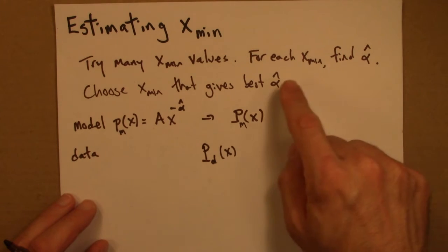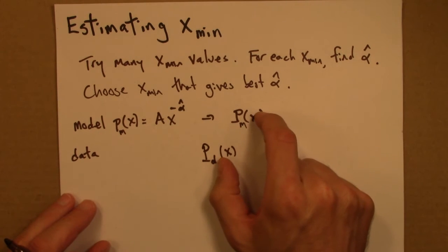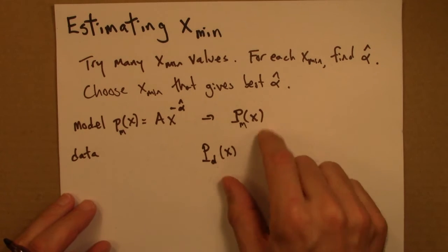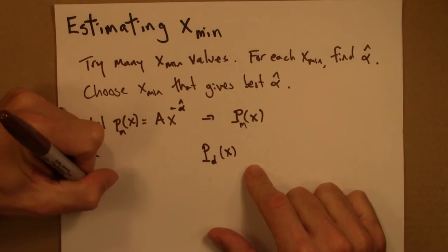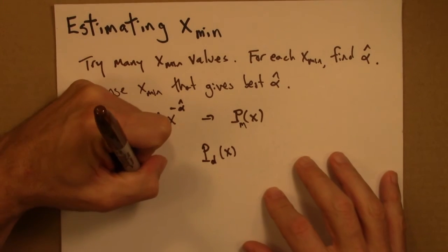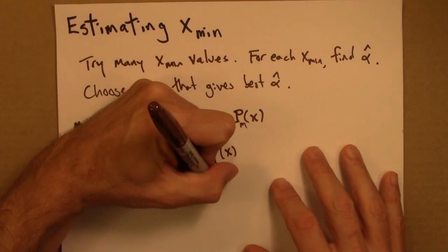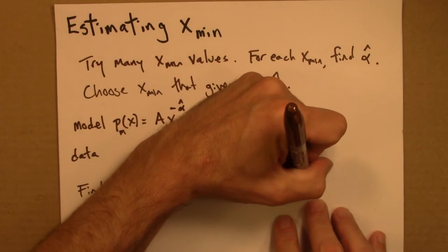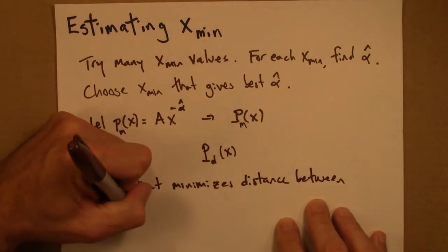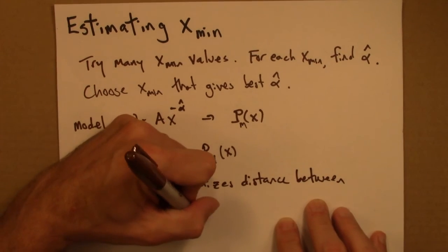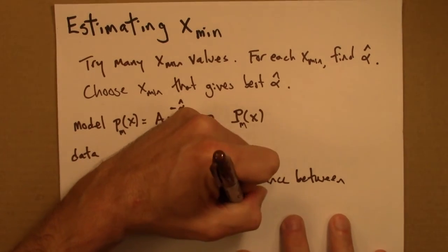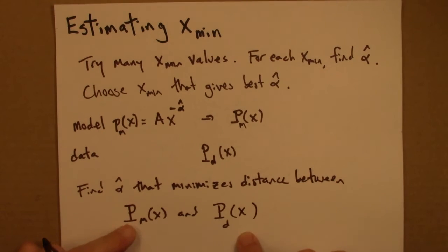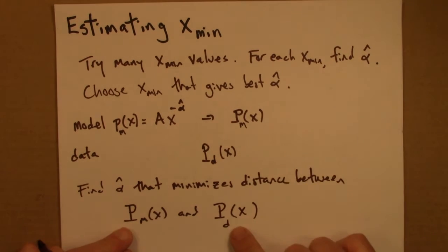And what I want to do is find the alpha that minimizes the distance between these two distributions. So find alpha hat that minimizes the distance between the model and the data. Basically, we're trying to find the model that leads to the best fit. And this is how one would measure it.